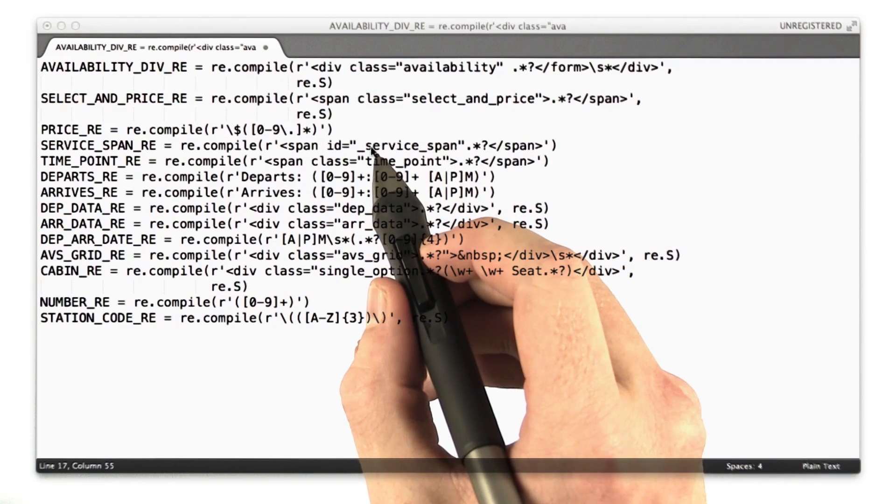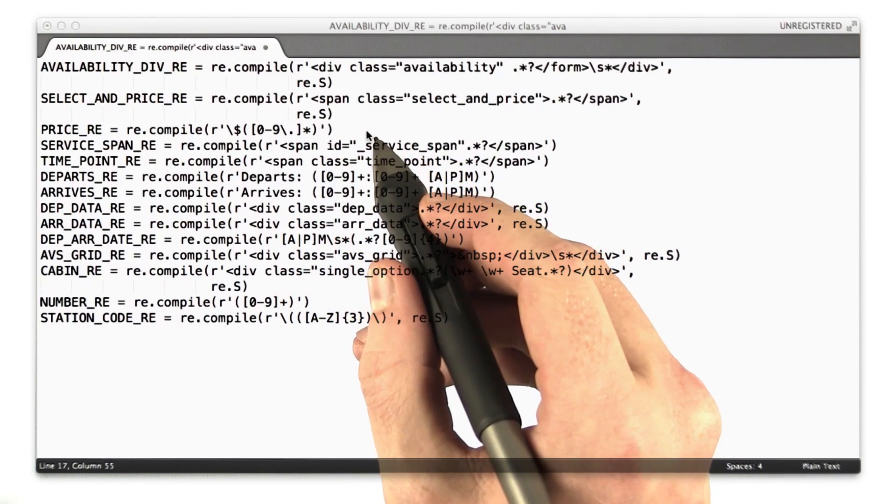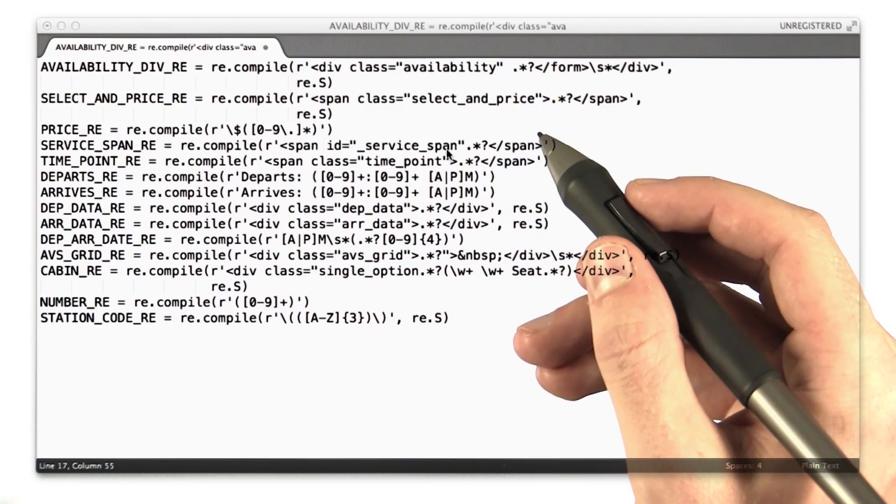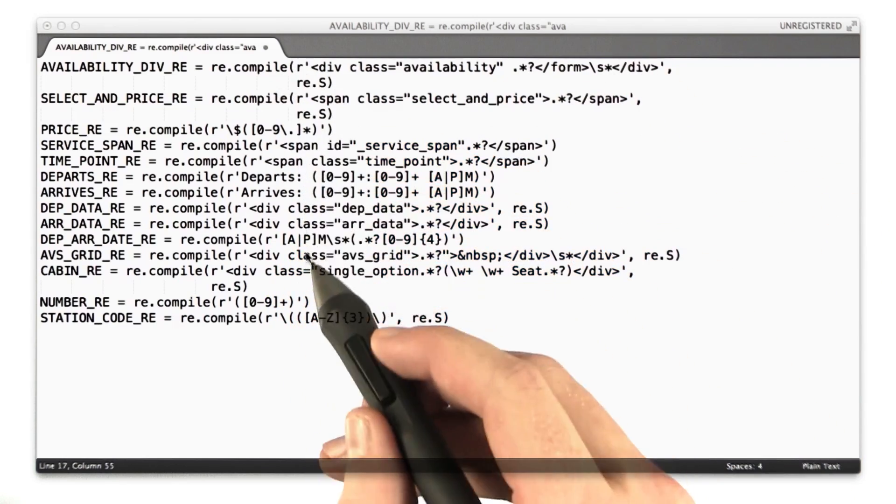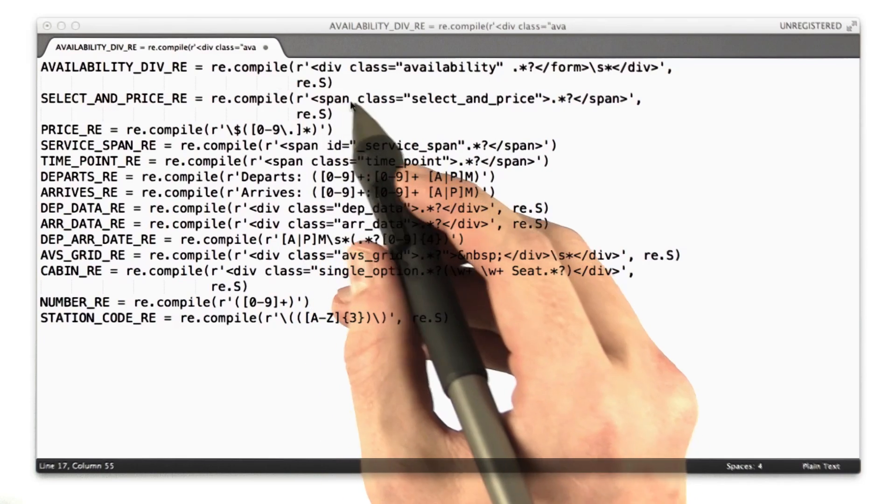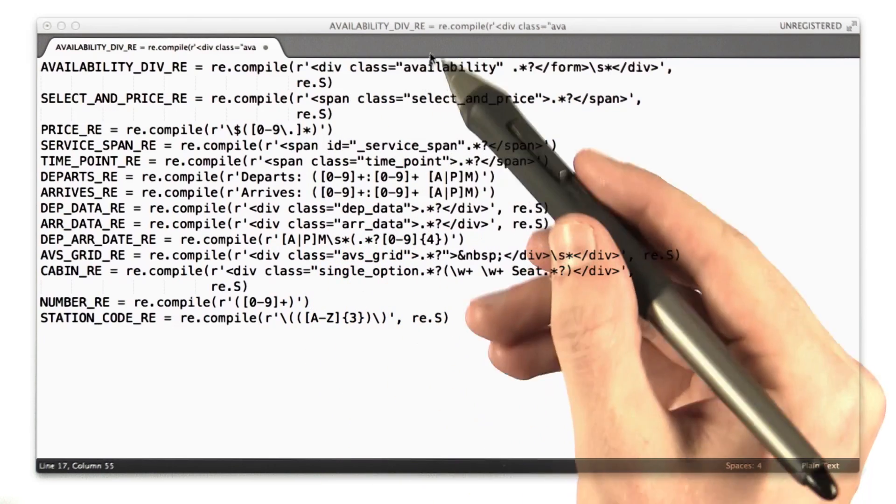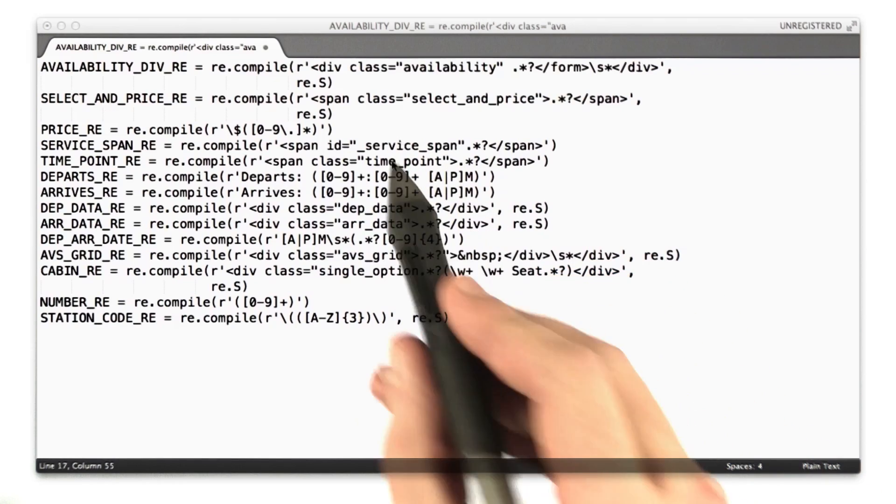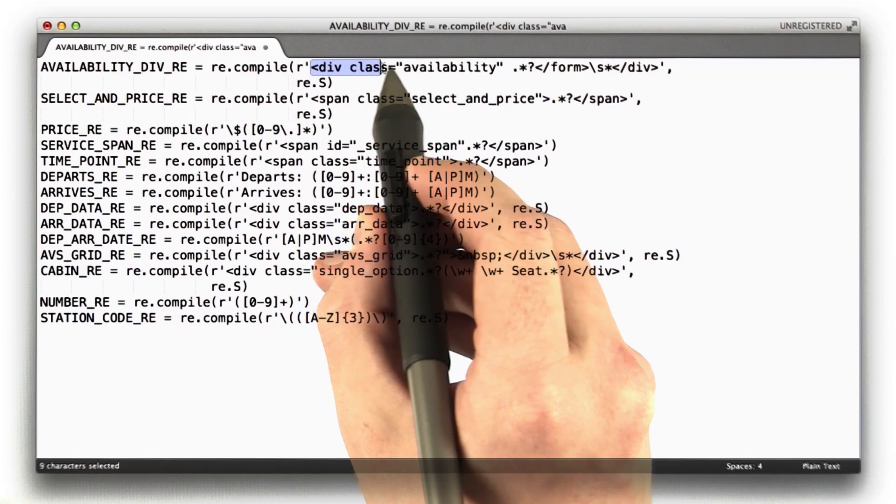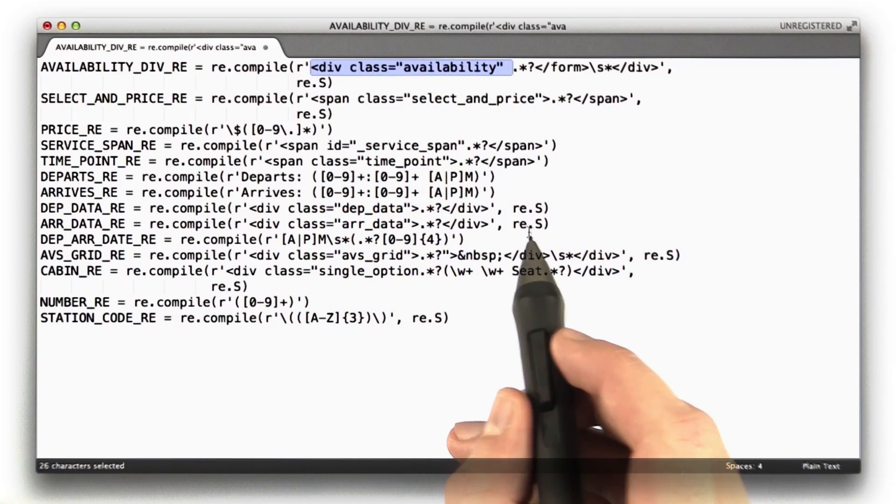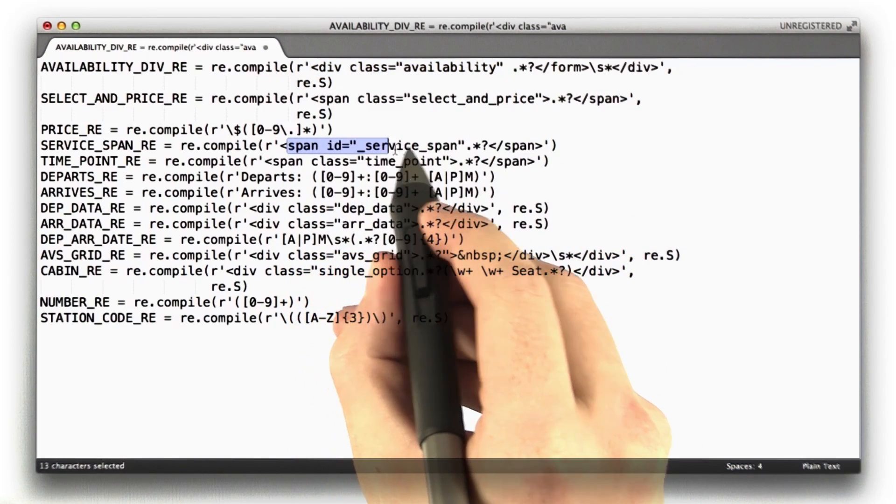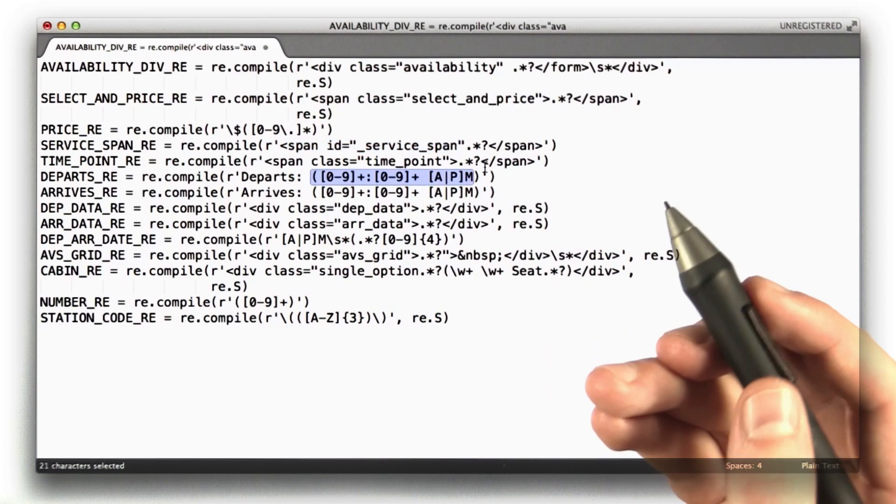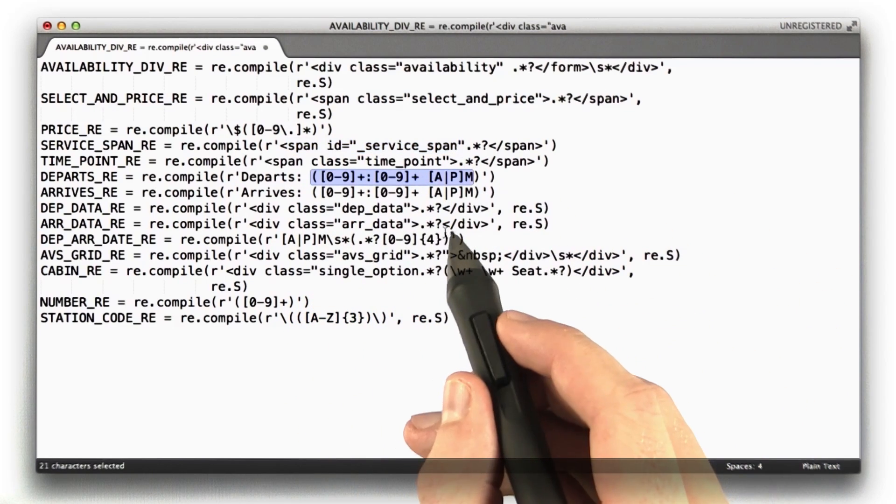Remember, I gave you some regular expressions during homework 2 to verify your quiz answers, to verify a username and an email. Well, these are a bunch of regular expressions that we actually use on Hipmunk to parse Amtrak's HTML. As you can see, this is just a wall of text. This is extremely error-prone. We're looking for a div with class availability, we look for this span whose ID is service span, this is what a time looks like. This is really nutso, and this is not the ideal way of doing things.